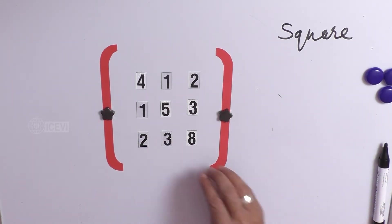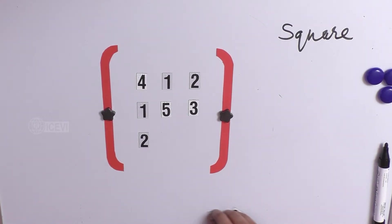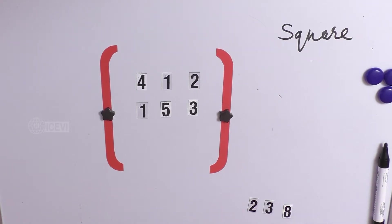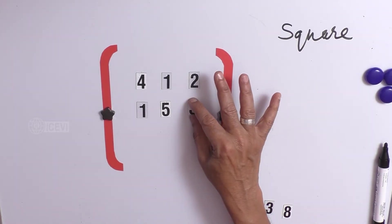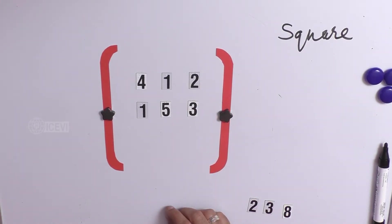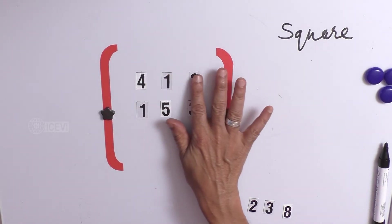Now, what we can do? Assume that we have taken one row out of this matrix. One row out of this matrix. Now, how many numbers are here?